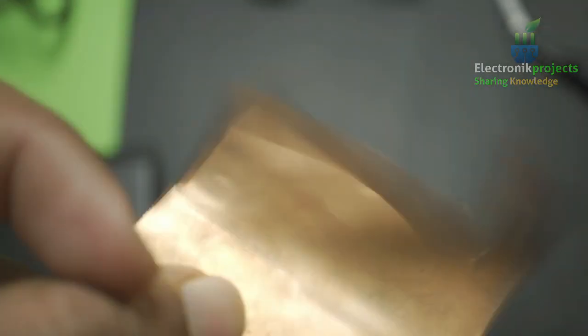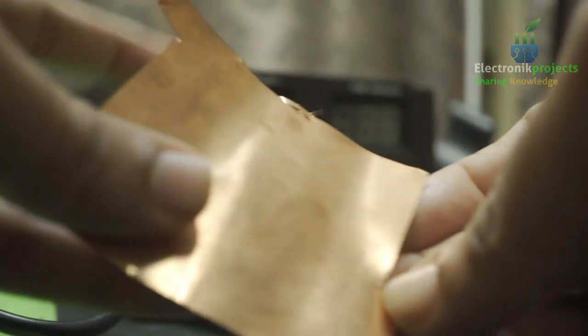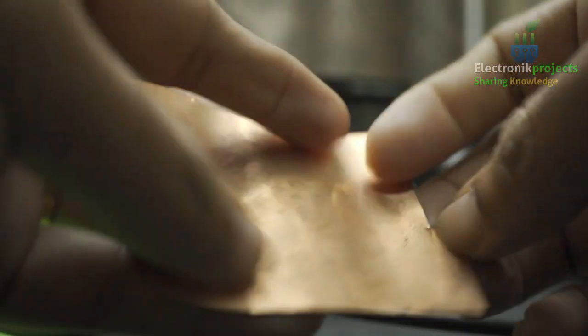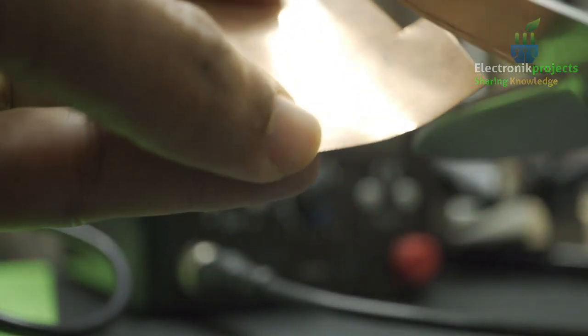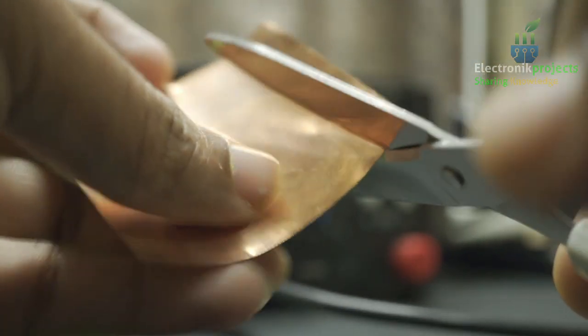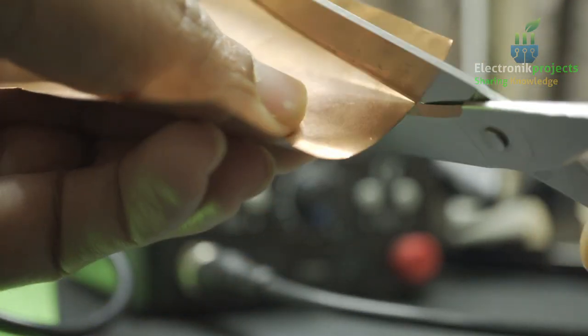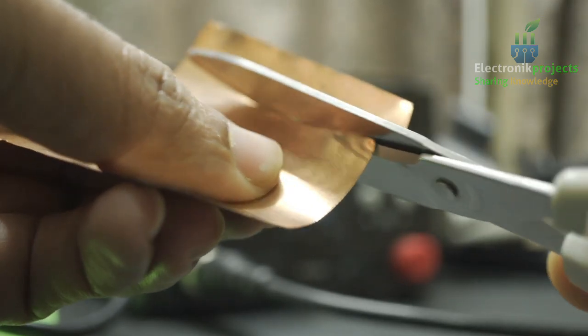Let's take a copper sheet like this and then we will cut this out like a flat duck mouth shape probe which will increase the sensitivity. Let's cut this out into shape.